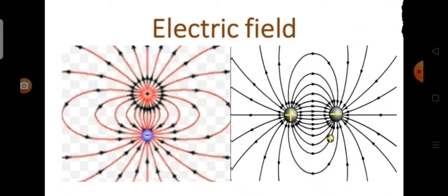The electric lines of force are straight or curved paths along which a unit positive charge tends to move in the electric field.